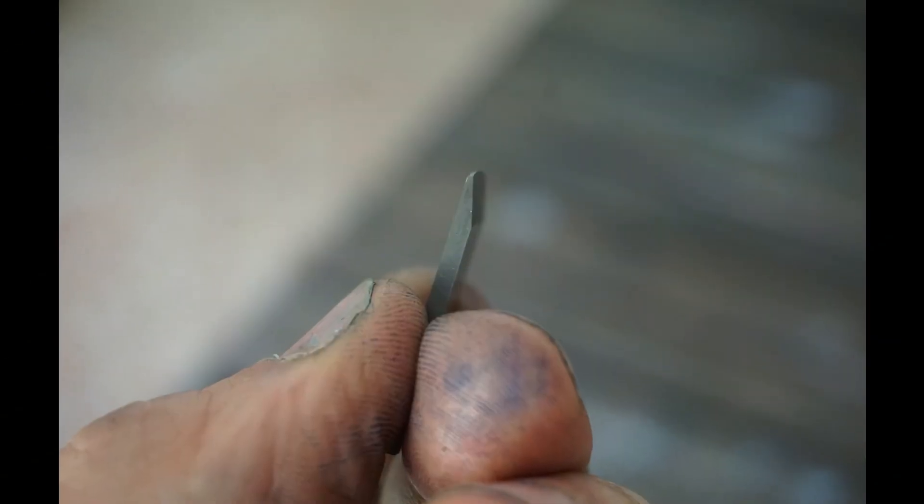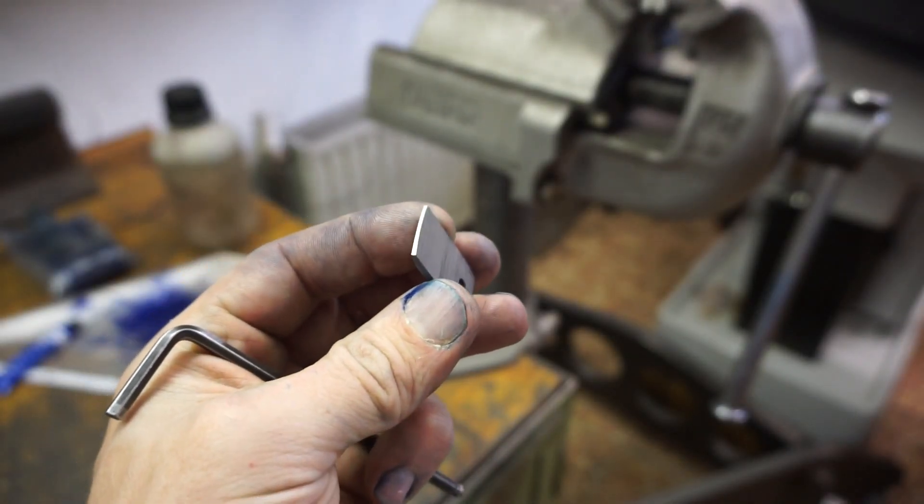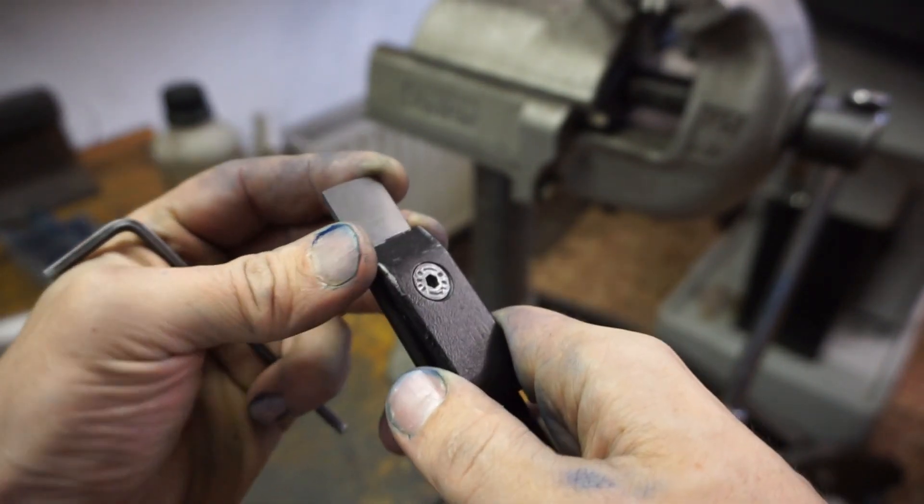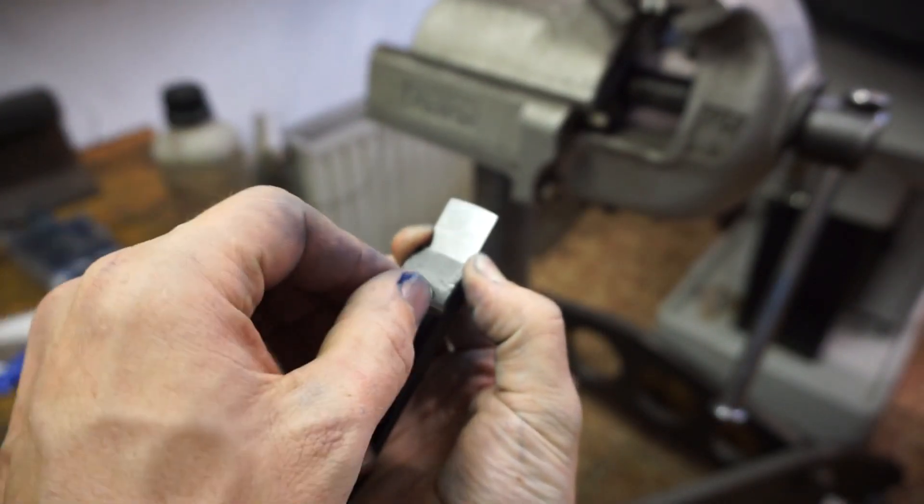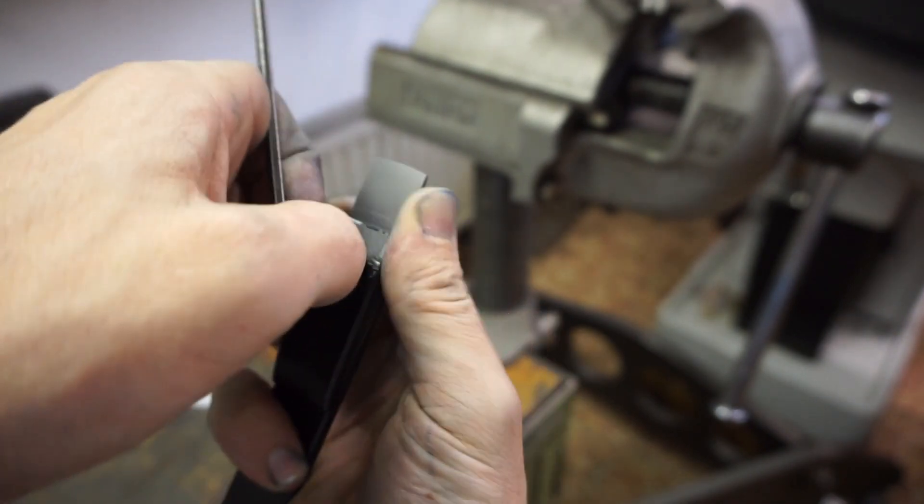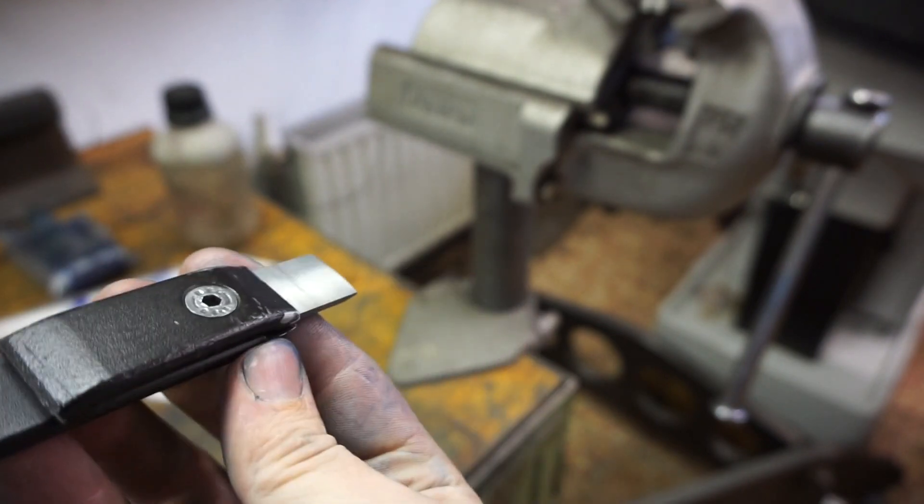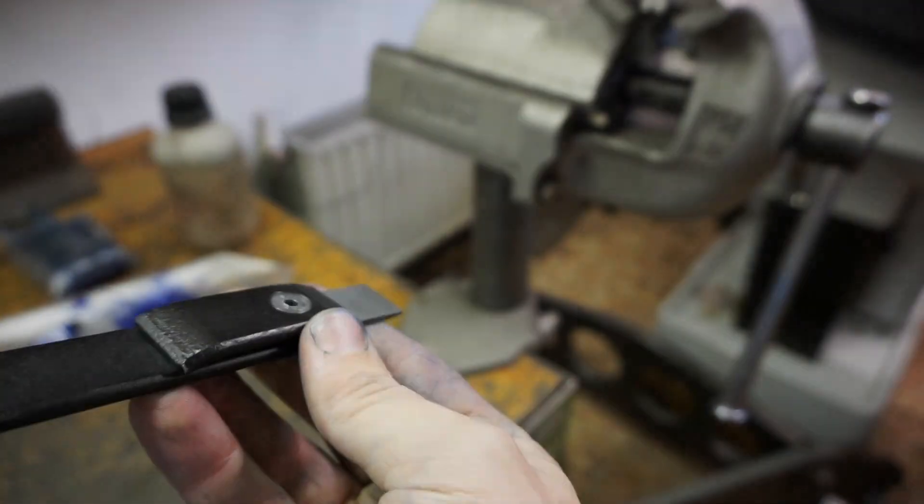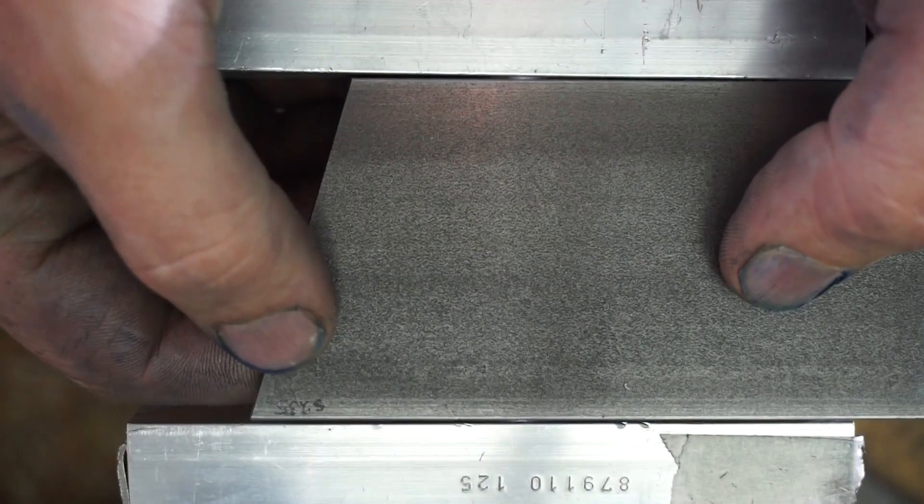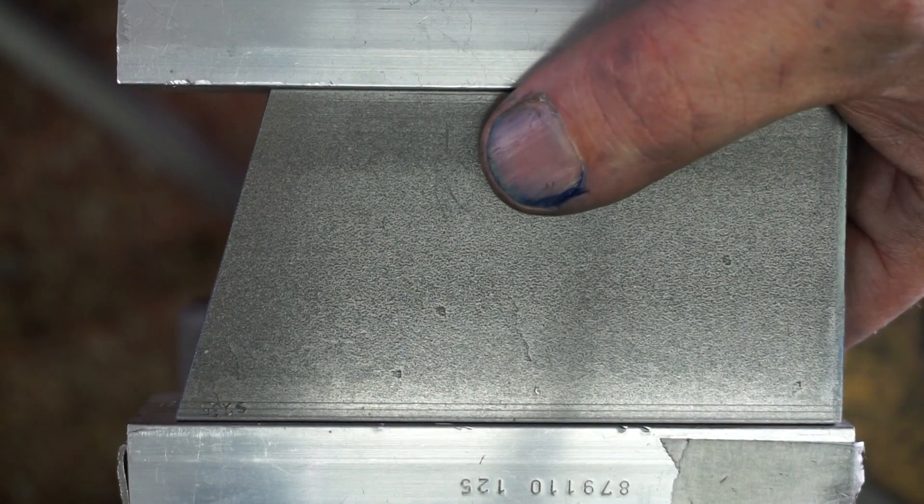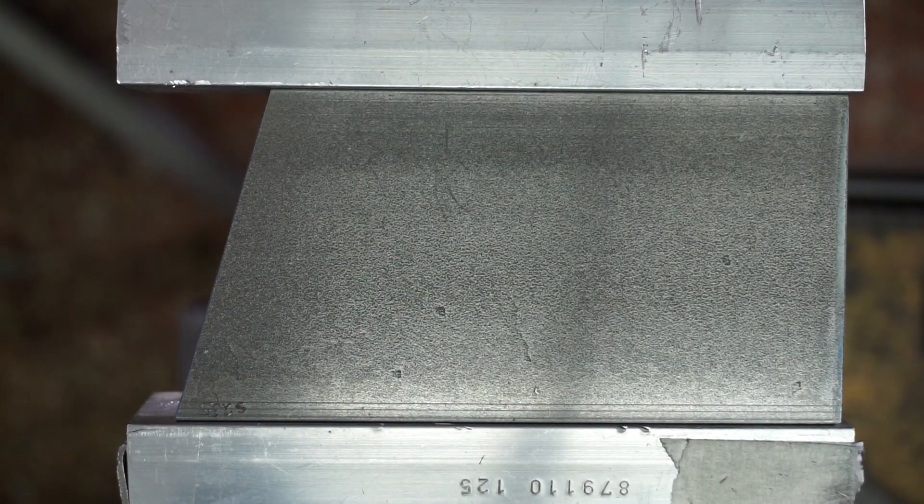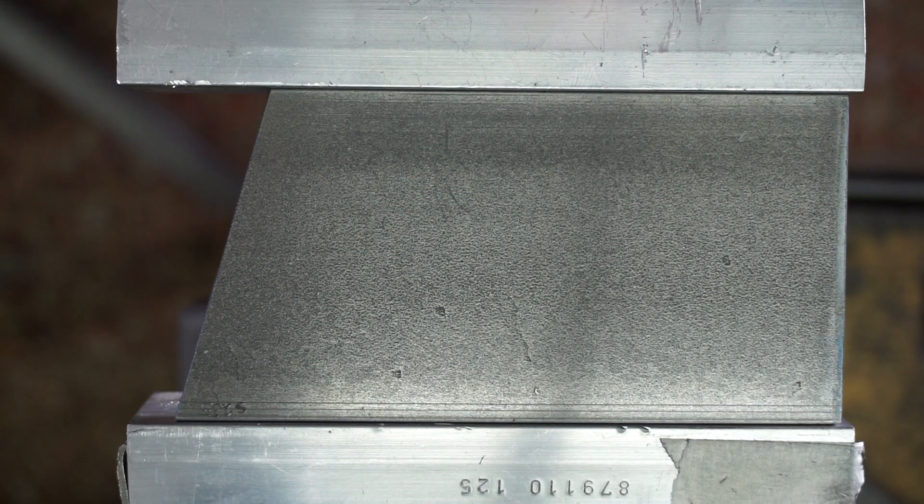Now let's give it a try. This is how it's used. Alright, let's have some test cuts on some sample material. In this case it's mild steel S235.